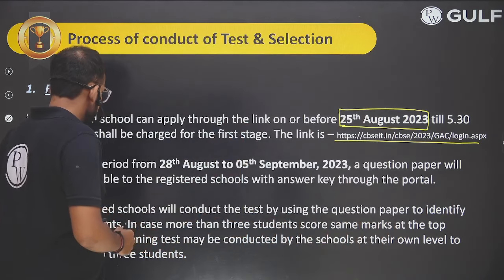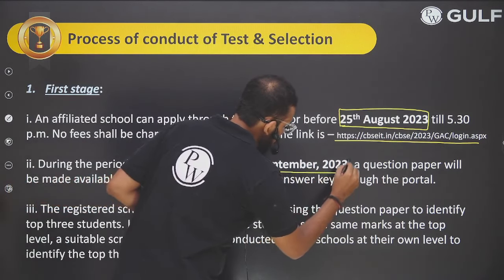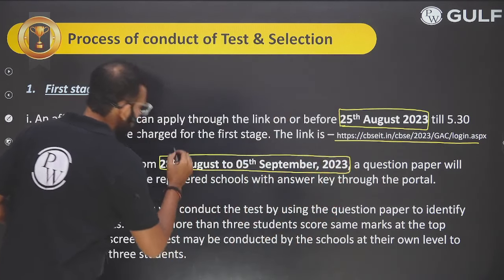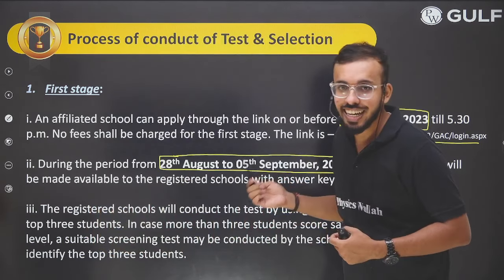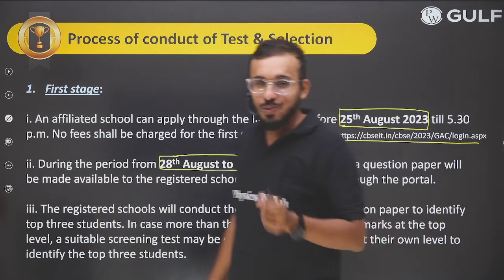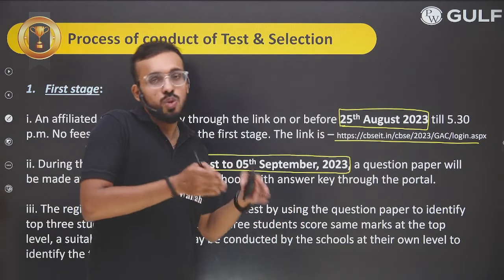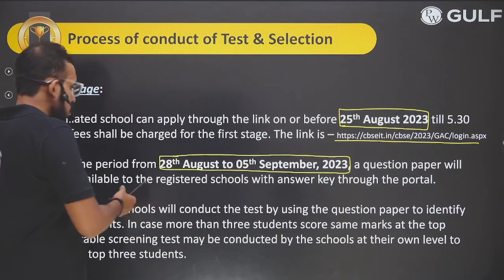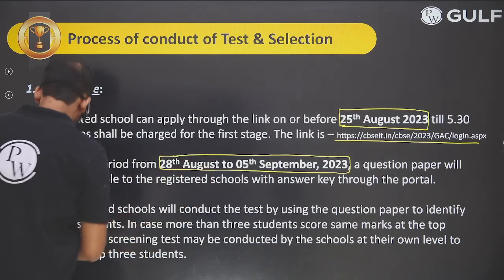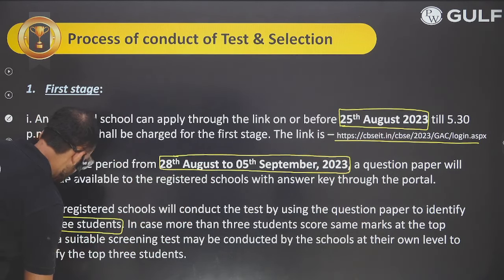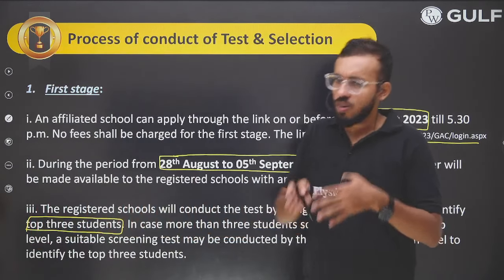After the school applies by 25th August, the school will receive a question paper along with an answer key between 28th August and 5th September — 5th September being Teachers' Day. The school will conduct the test on its premises, and based on the results, the school will identify the top three students from those who gave the exam.